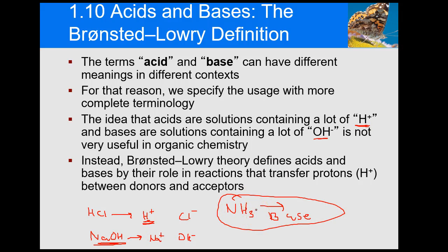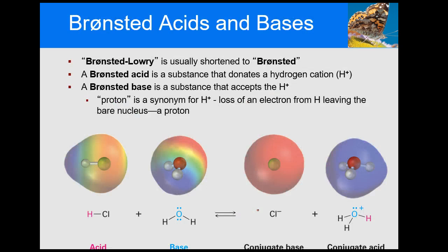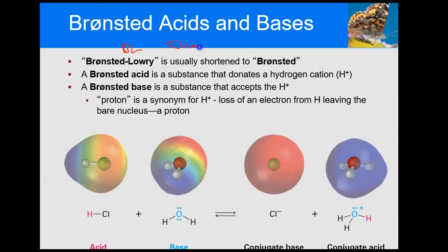A Bronsted acid is a substance that donates a hydrogen cation. Bronsted and Lowry looked at this as a chemical reaction with water. You have to have water to have an acid or a base.